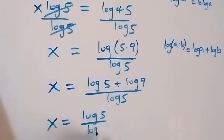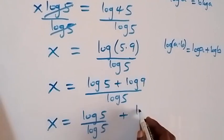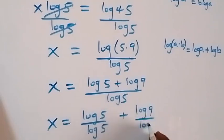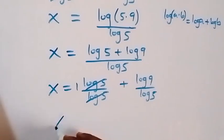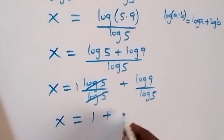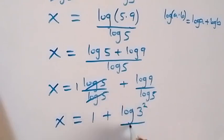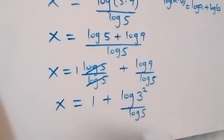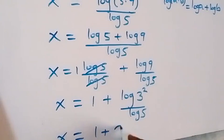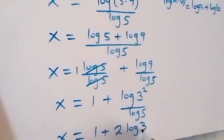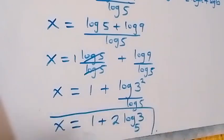Log 5 over log 5 cancels to give 1, so we have x equals 1 plus log 9 over log 5. We can write log 9 as log 3 raised to power 2, and applying the power rule, bringing 2 to the front, x equals 1 plus 2 log 3 over log 5, which we write as 1 plus 2 log base 5 of 3.